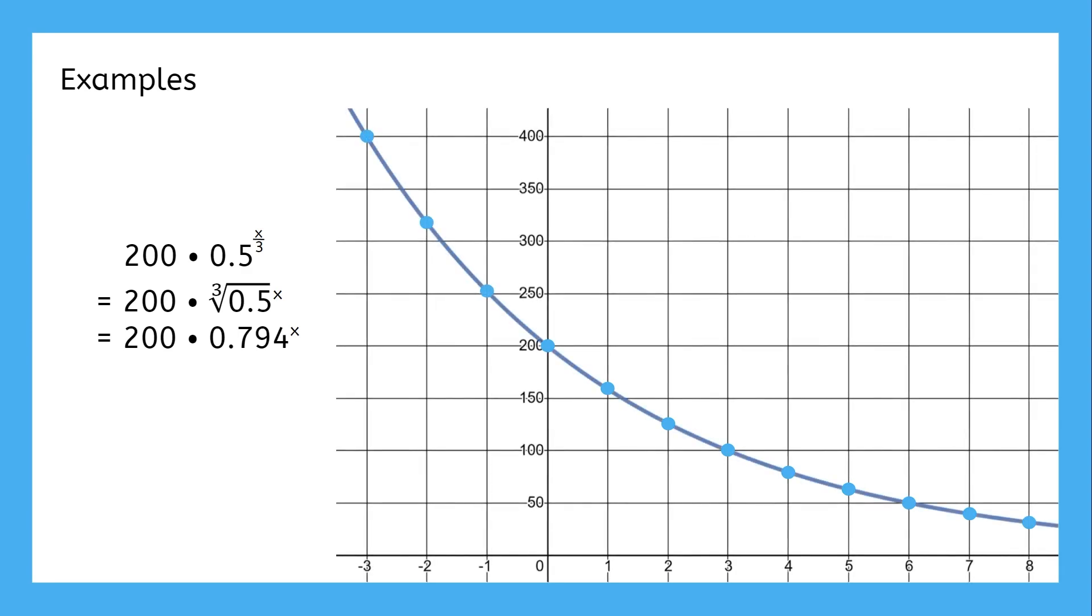Notice how, after moving three units to the right, the value is half of the initial value, which is exactly what the original function said should be happening. And by moving three units to the left, the output doubles.